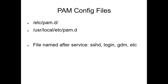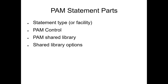When you configure PAM on a modern system (not Solaris), your configuration files go in /etc/pam.d — because we stole the config from Linux. On a BSD-style system, also /usr/local/etc/pam.d. The configuration for each service is in a file named after that service — so your sshd config is in /etc/pam.d/sshd. Each PAM statement has four parts: the statement type (also called facility or chain name), a PAM control, the PAM shared library, and options to the library.